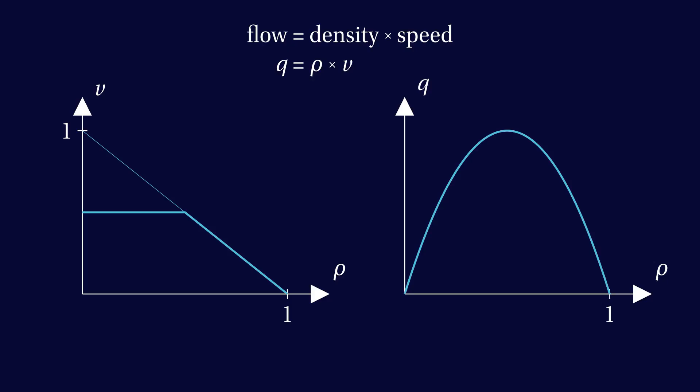The graph of traffic flow, that is density times speed, now changes from a parabola to something that has a straight line as its first half. This is notable because the slope of this graph is what determines the slope of the characteristics.